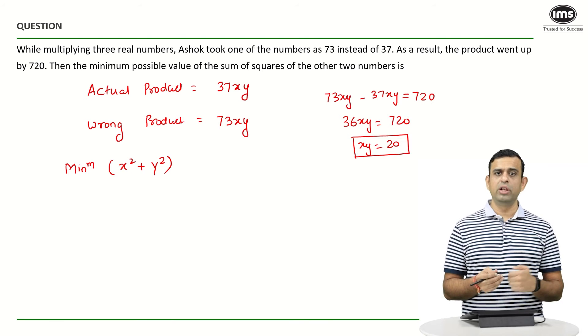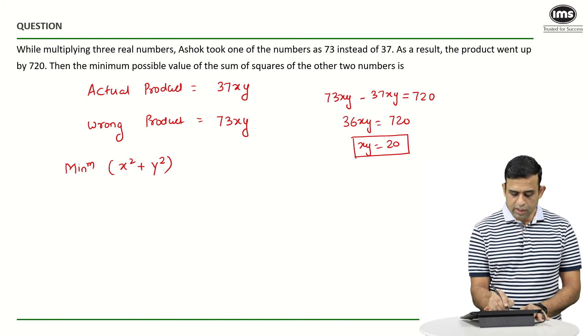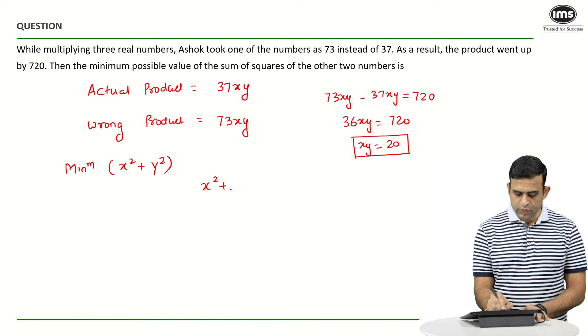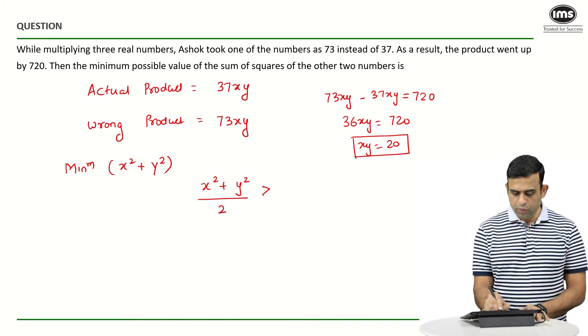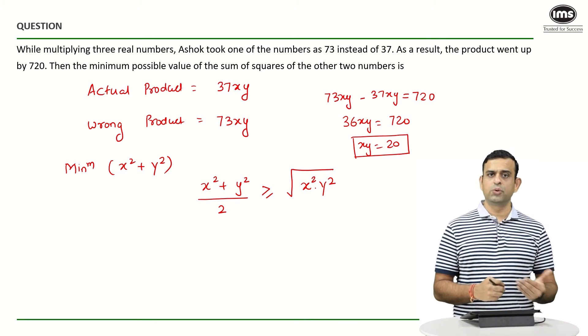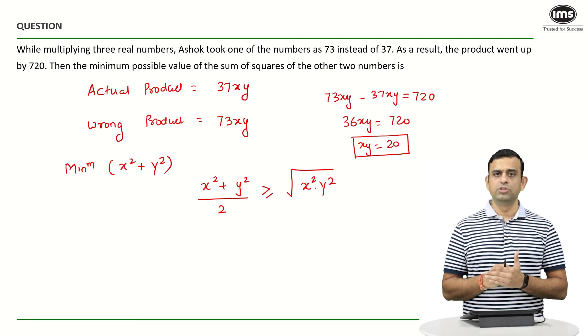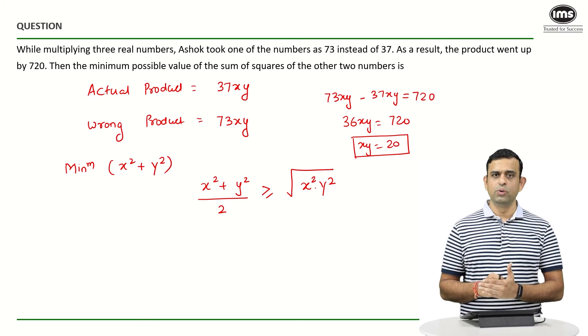If I assume the two numbers to be x² and y², can I say that (x² + y²)/2 should be more than equal to square root of the product, which is √(x²y²)? We use the premise of AM ≥ GM.